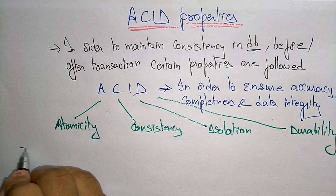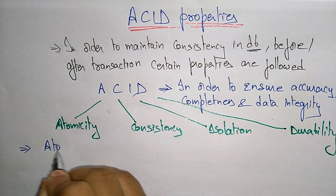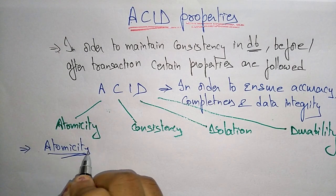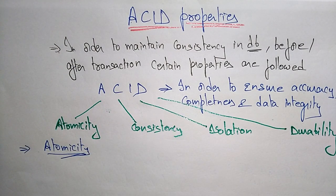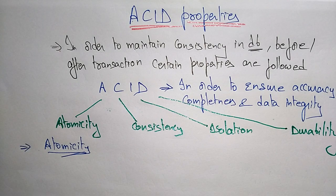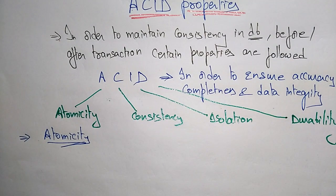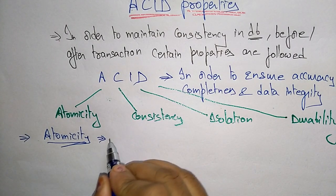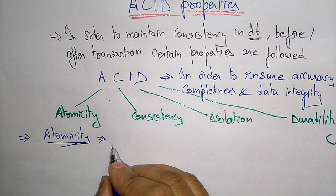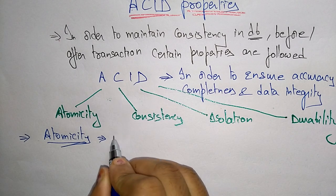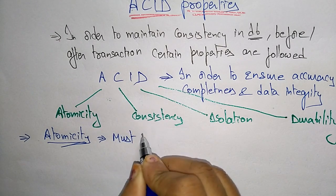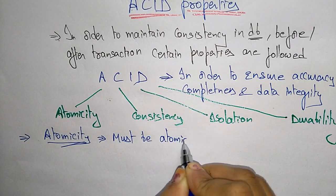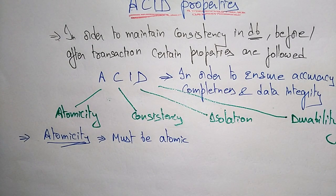Let us discuss each one by one. First is Atomicity. What is Atomicity? It states that the transaction must be atomic — meaning the transaction that you are performing must be atomic.